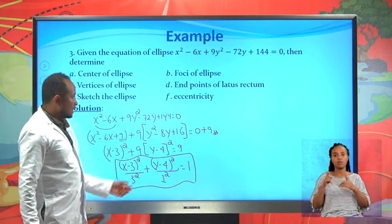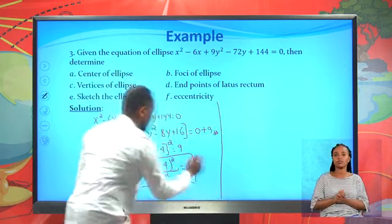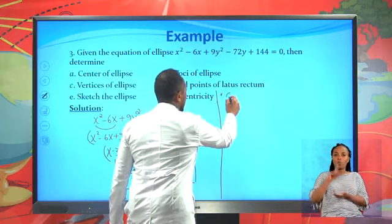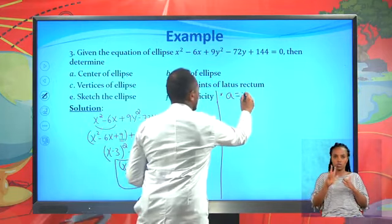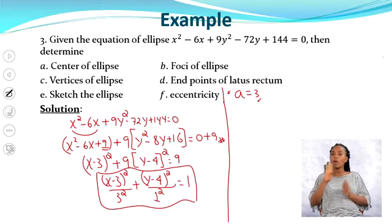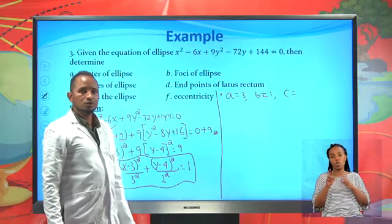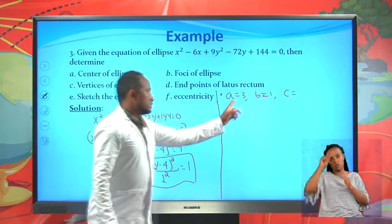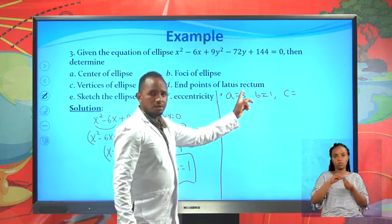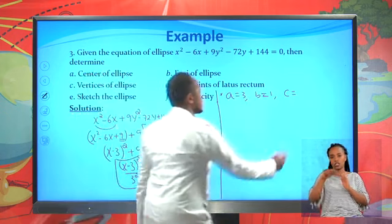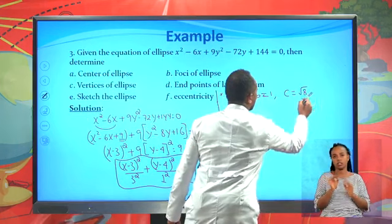From this standard form, we can see that a = 3 and b = 1. To find c, use c² = a² − b² = 9 − 1 = 8, so c = √8. The major axis is horizontal since x comes first with the larger denominator.